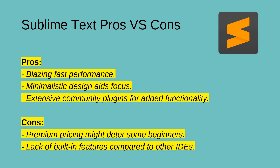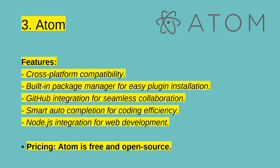Sublime Text pros include blazing fast performance, a minimalistic design that aids focus, and extensive community plugins for added functionalities. On the other hand, the premium pricing might deter some beginners, and it lacks built-in features compared to other IDEs.